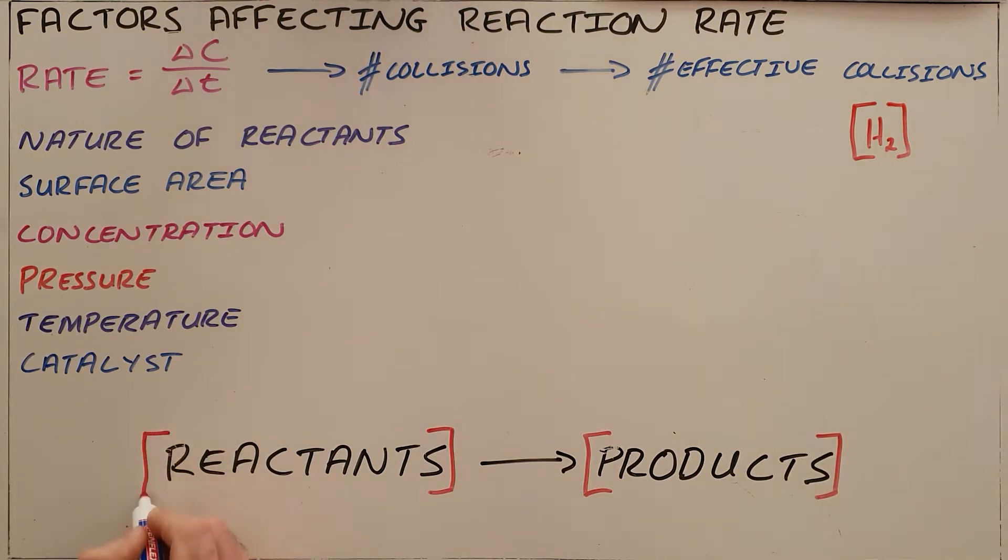We define the rate of a reaction as the rate at which the concentration of either our reactants or the products changes. We can define it by either reactants or products because we know that the conversion between them is governed by a fixed ratio, so the rate of change for both will be equal.